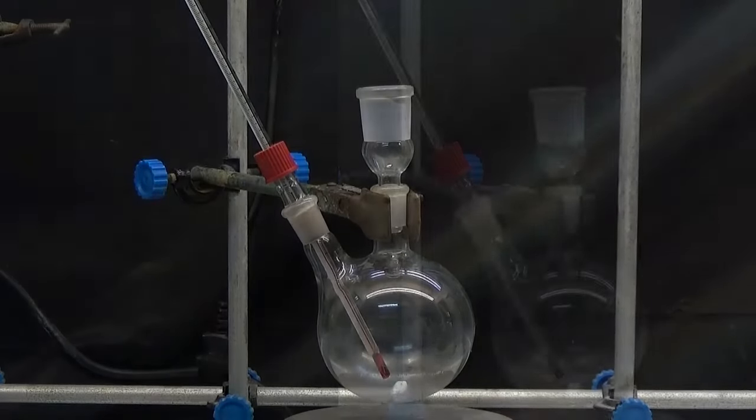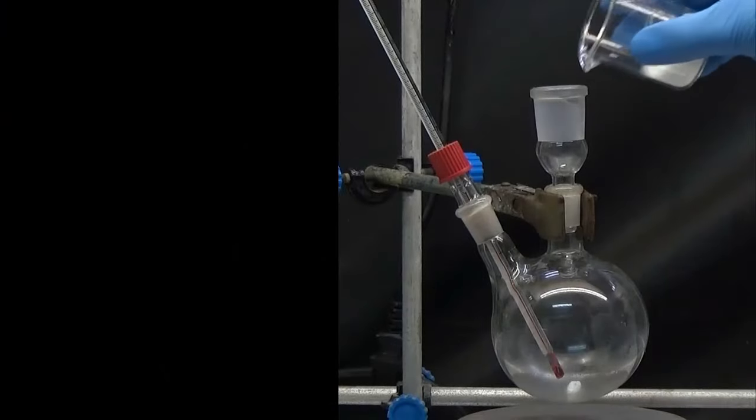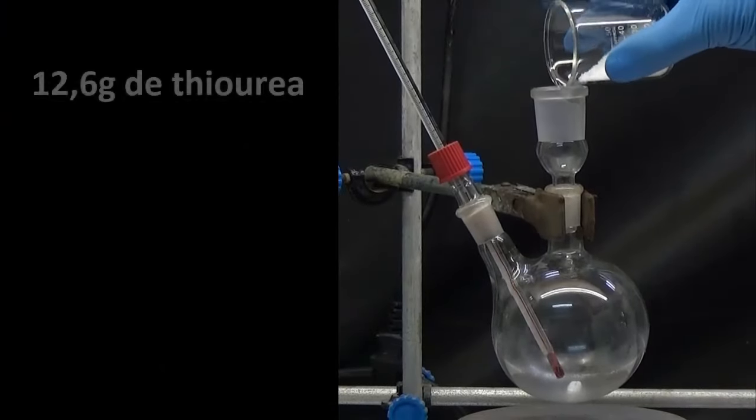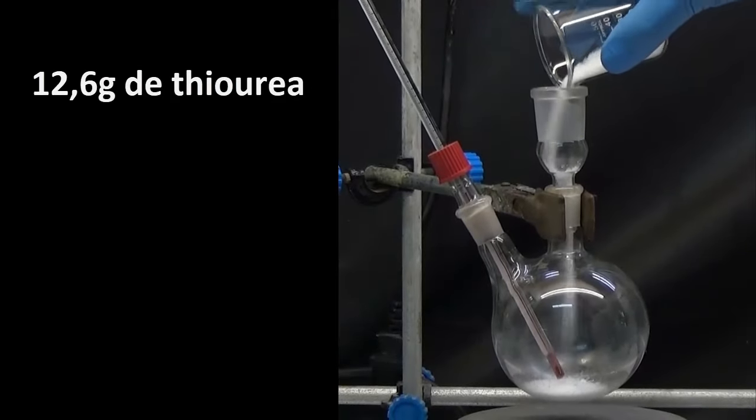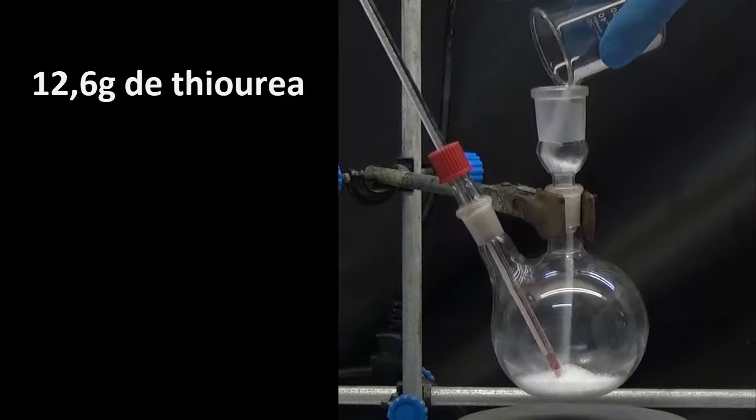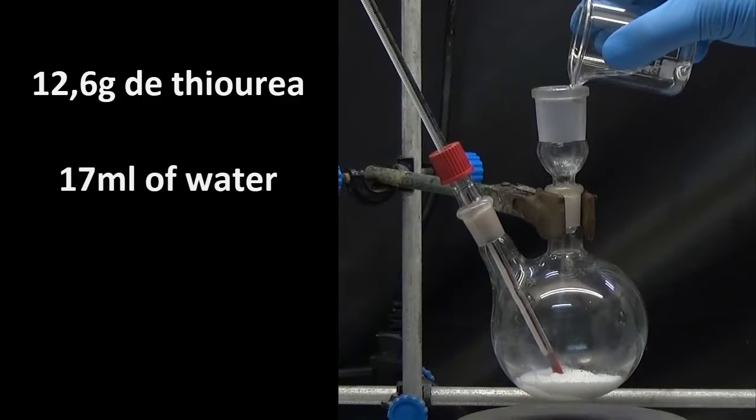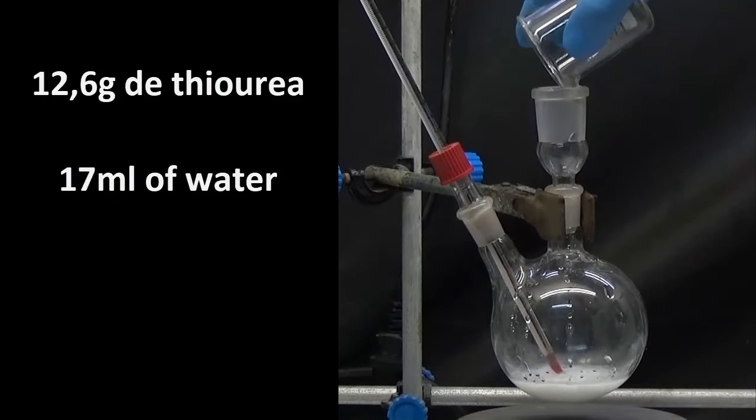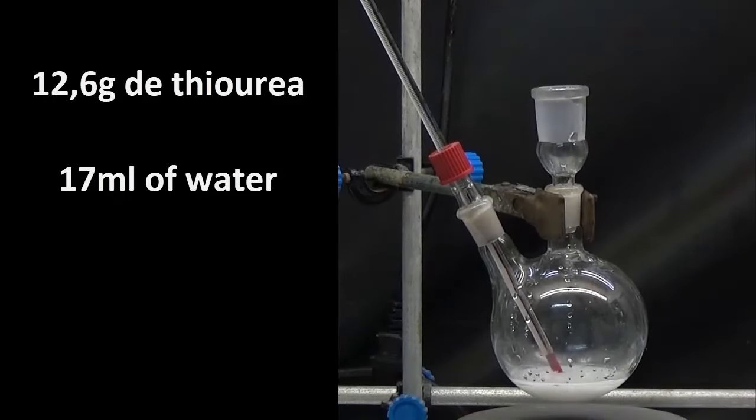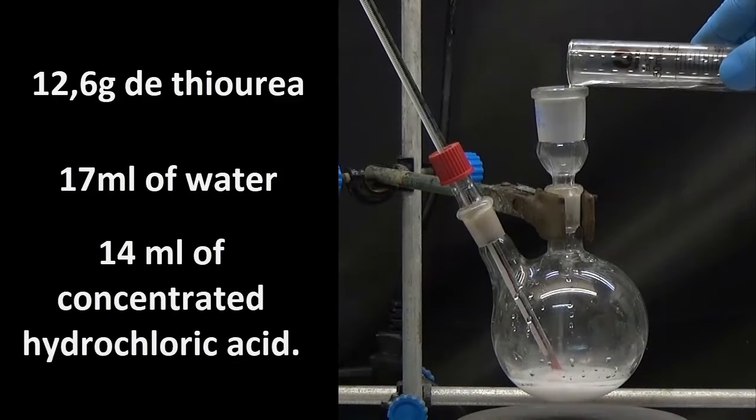In a 250 milliliter flask with a thermometer, we place 12.6 grams of thiourea, 17 milliliters of water, and 14 milliliters of concentrated hydrochloric acid.